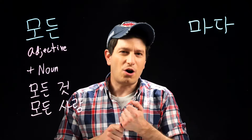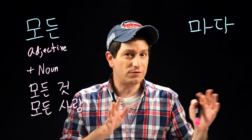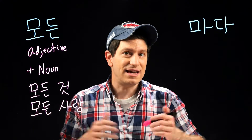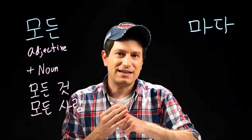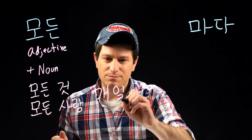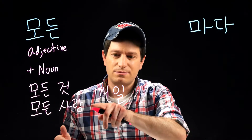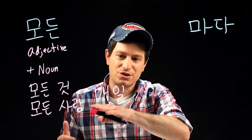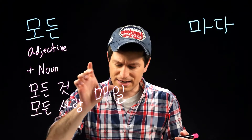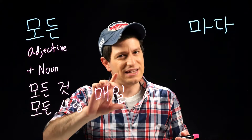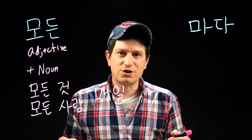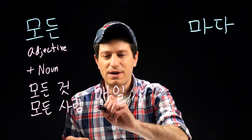Also note that there are other 한자 words that already have the meaning of 'every' within them. For example, that would be with the 한자 매. So you might have a word like 매일. 매일 is a 한자 word that means 매 — every — 일 — day — so 'every day'. You wouldn't use 모든 on top of a 한자 word, saying something like 모든 매일, meaning 'every every day'. That would sound repetitive.